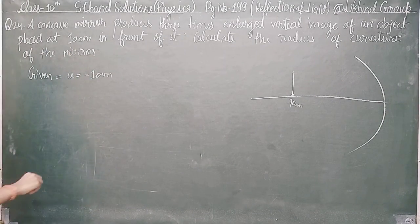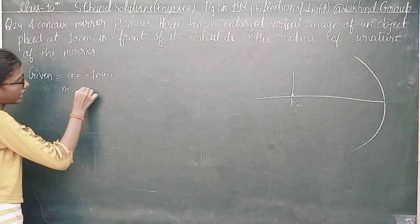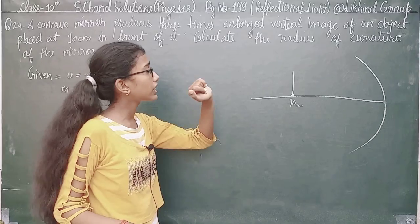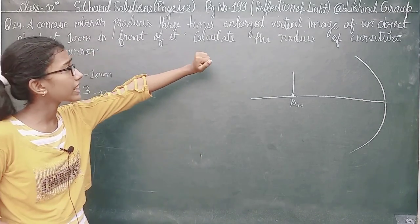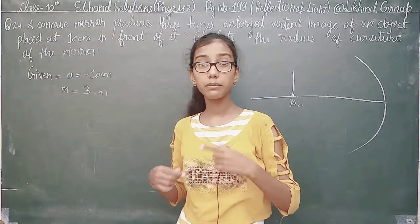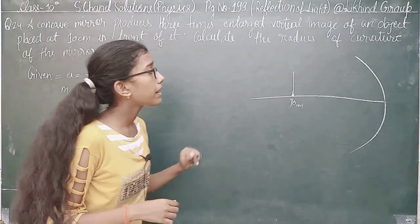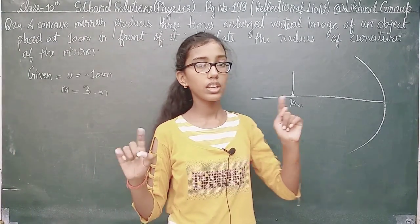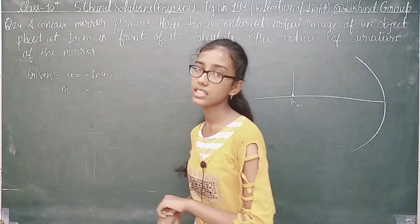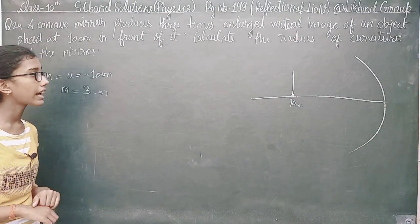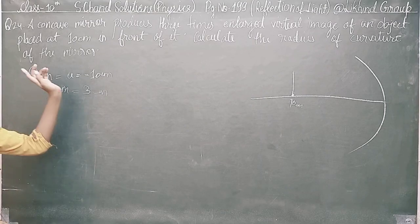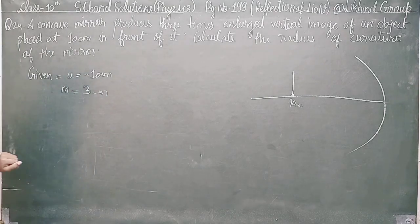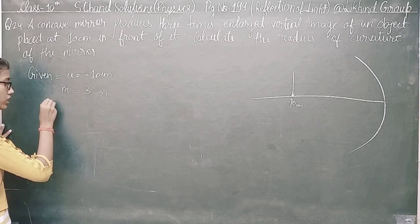After that, we have magnification which is 3. The magnification is 3 times enlarged. Since it is a virtual image, we will not put a minus here. If it were a real image we would put a minus, but since it is a virtual image we do not put a minus. So our magnification is positive 3.